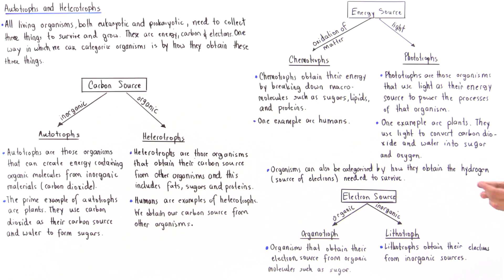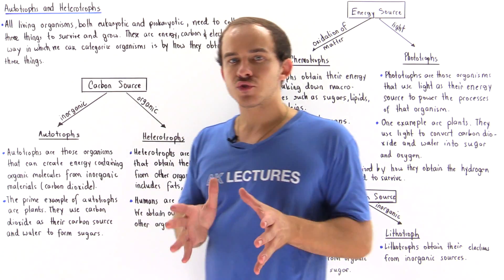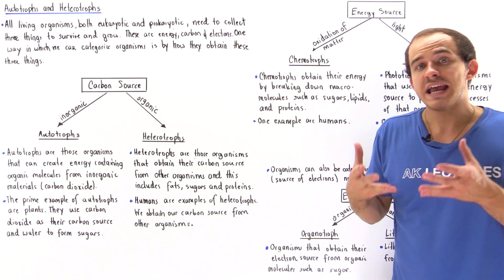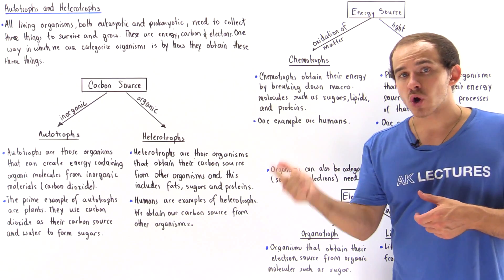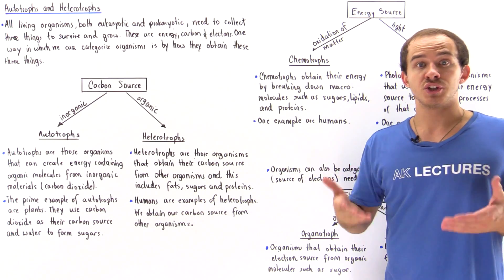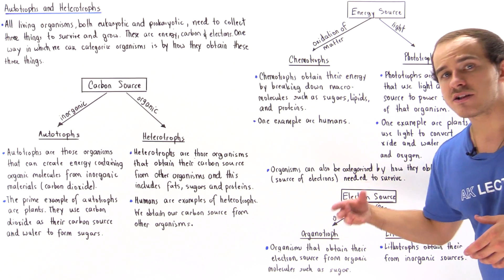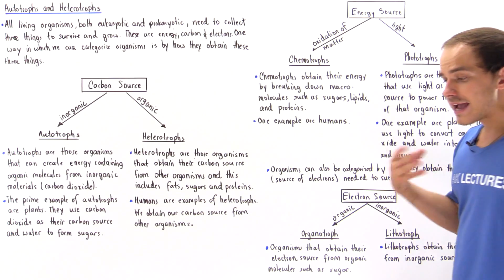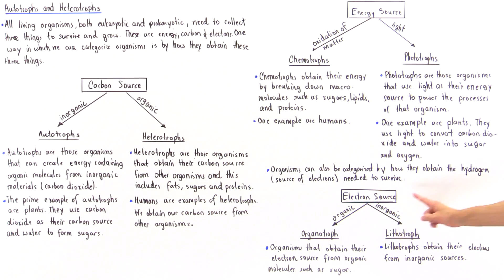The final way to categorize organisms is by their source of electrons. Those organisms that obtain their electrons from organic materials such as sugars, proteins, or lipids — including humans — are known as organotrophs. While those organisms that obtain their electron source from inorganic materials are known as lithotrophs.